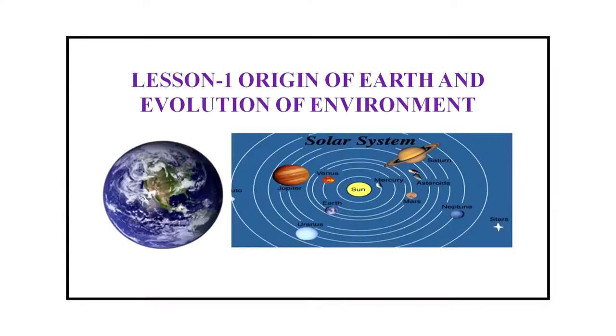Today we will discuss lesson number 1 from module 1, titled Environment Through Ages of Environmental Science Senior Secondary Course. The title of the lesson is Origin of Earth and Evolution of Environment.